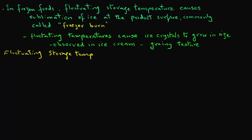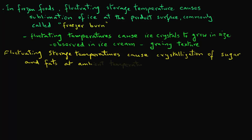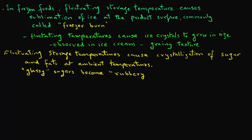Fluctuating storage temperatures also cause crystallization of sugars and fats, bringing about unacceptable changes in foods stored at ambient temperatures. Amorphous or glassy sugars become rubbery due to water uptake or increase in temperature, and as they crystallize in this rubbery state, they expel water and become grainy in texture. In chocolates, if moisture condenses on the surface, it draws out sugar from the interior, causing an unacceptable grayish appearance.